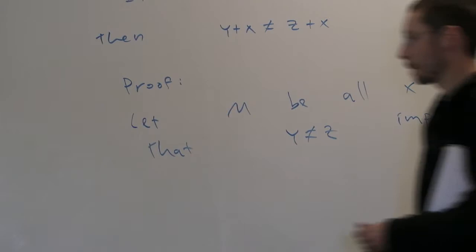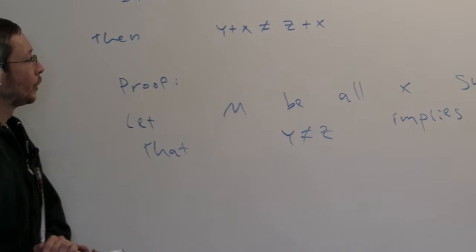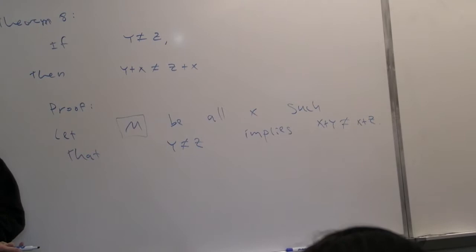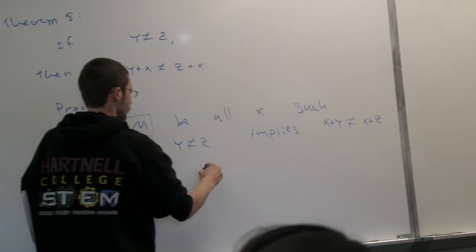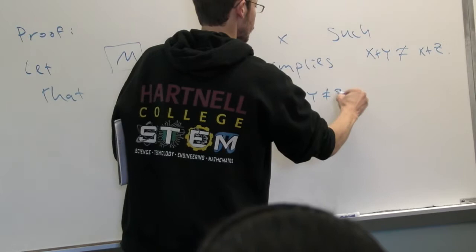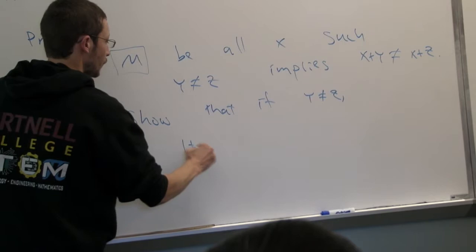We don't really know much about m at this point, but we'd like to see if one might be one such number. So assuming that y is not z is true, we want to show that one plus y is different from one plus z.